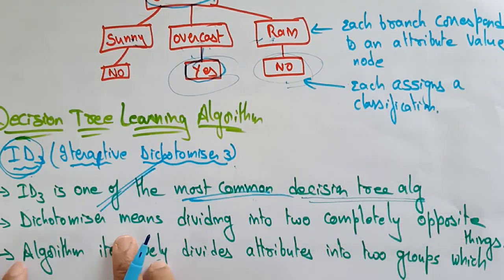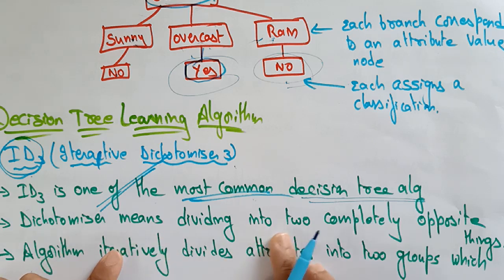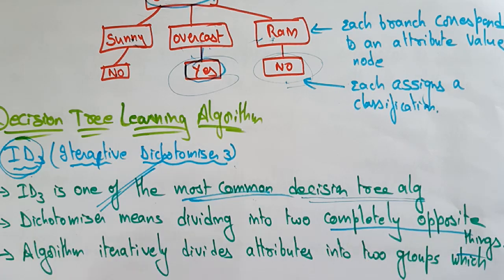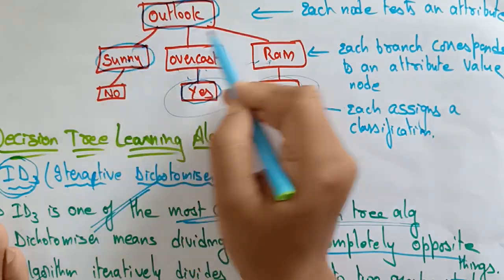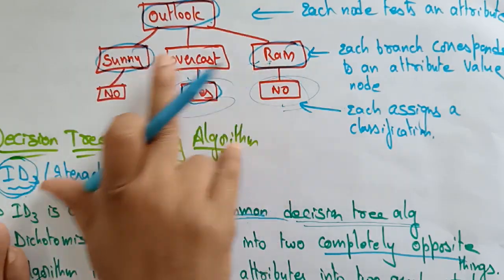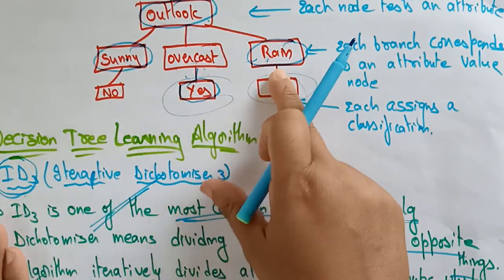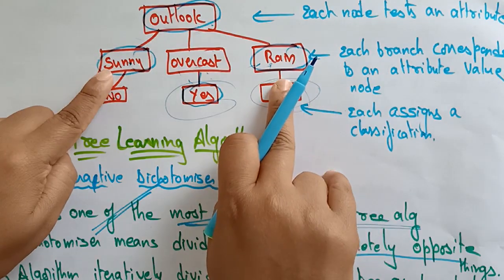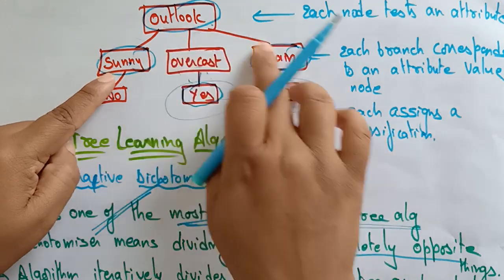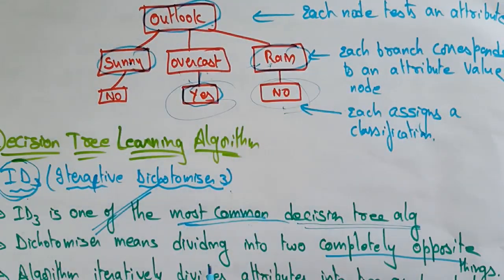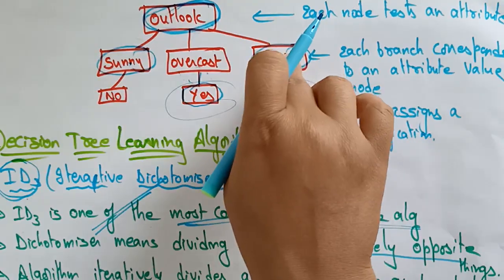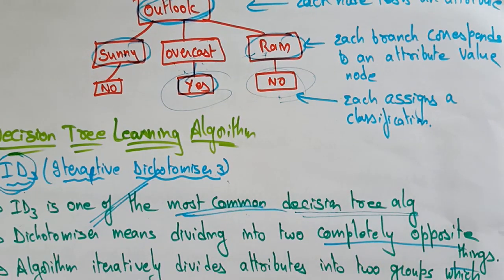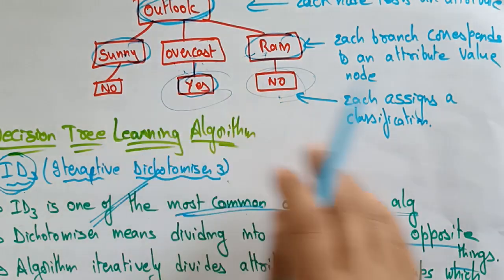What is a dichotomizer? Dichotomizer means dividing into two completely opposite things. For example, in weather forecasting, sunny and rainy are two completely opposite things — sunny means too hot and rainy means complete rain. These are two opposite things, so we call this dichotomizing.